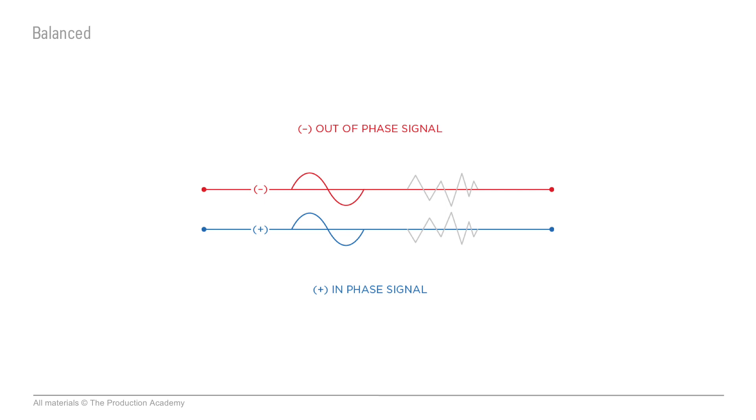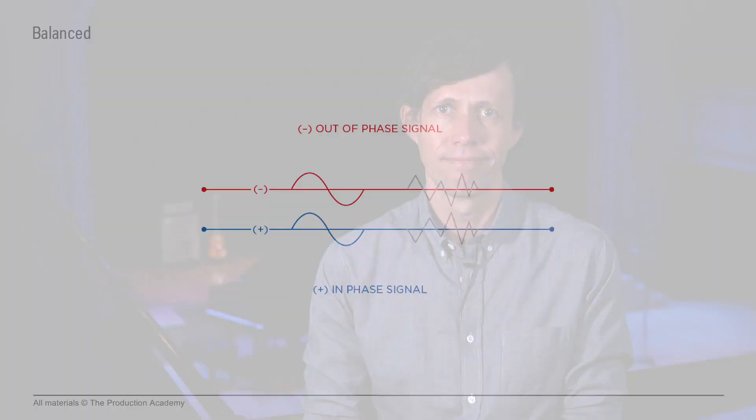This is called common mode rejection. This is a really effective trick, and like I said, you can run balanced audio really far.